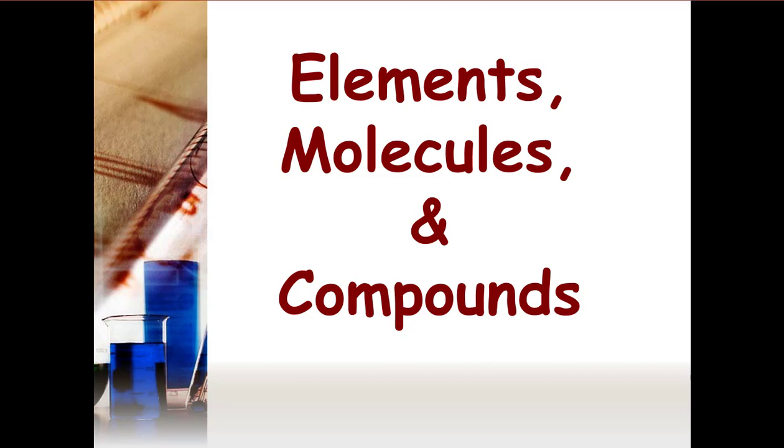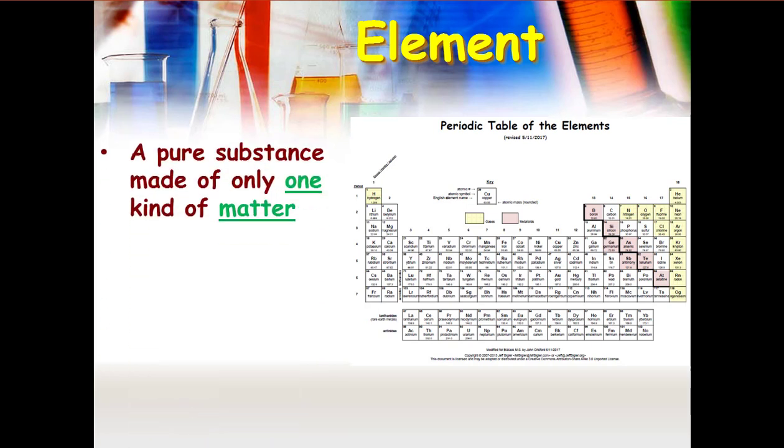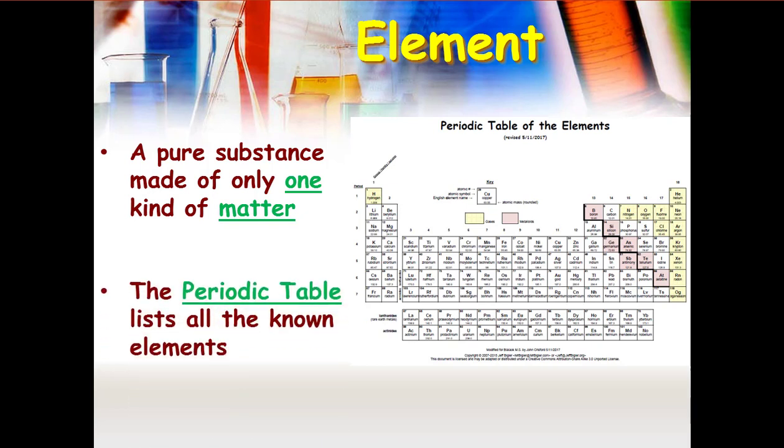I have a little accompaniment. All right, so first of all, an element is a pure substance made of only one kind of matter. We track these guys on the periodic table, which lists all the known elements.